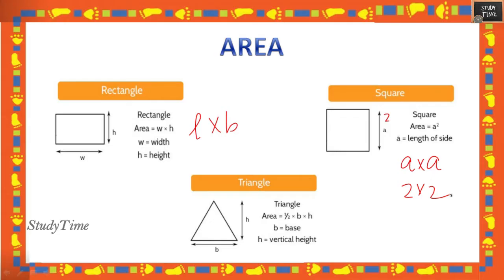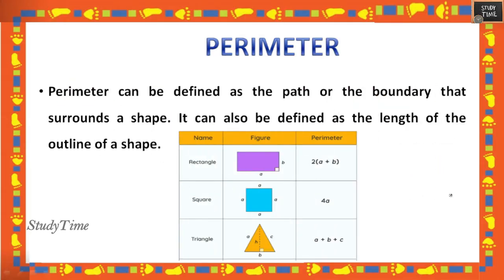Next we'll see the perimeter. Perimeter is defined as the path or boundary that surrounds a shape — simply the outline of a shape. For a rectangle, two sides are equal so it is 2a + 2b. For a square, four sides are equal so it is 4a. For a triangle, all sides can be equal or non-equal, so you just add all the sides.